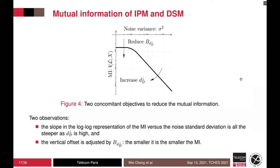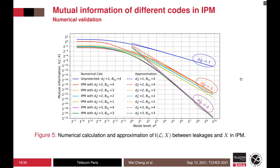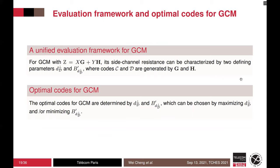Visually, we illustrate the impact of dual distance and the adjusted kissing number as in figure 4. In particular, the slope of the curves in log-log representation is equal to the dual distance, and the vertical offset is linked to the B'_d. An example of 4-bit kissing number in IPM is shown in figure 5. The slope and the vertical offset are as expected. Therefore, we propose a unified evaluation framework for GCM in which the side-channel security can be categorized by the dual distance and the adjusted kissing number. In addition, the optimal code can be given by maximizing the dual distance.